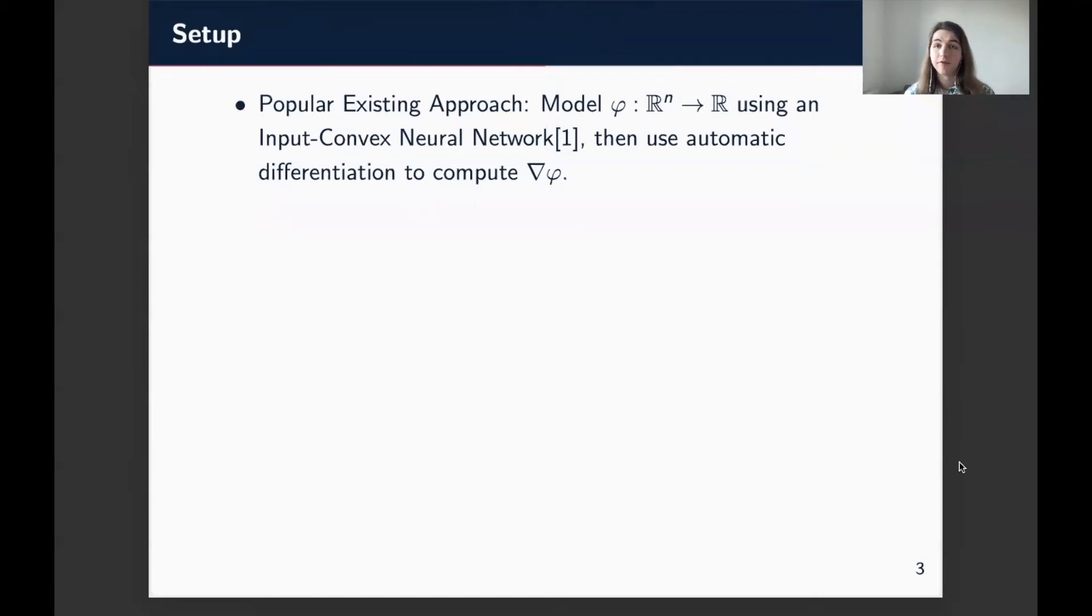So the gist is we want a way of modeling these gradients of convex functions as a class of maps. So the popular existing approach is to work with an input convex neural network and model a potential function, let's say phi, and then we use automatic differentiation to compute the gradient map of that potential. This is the popular approach.